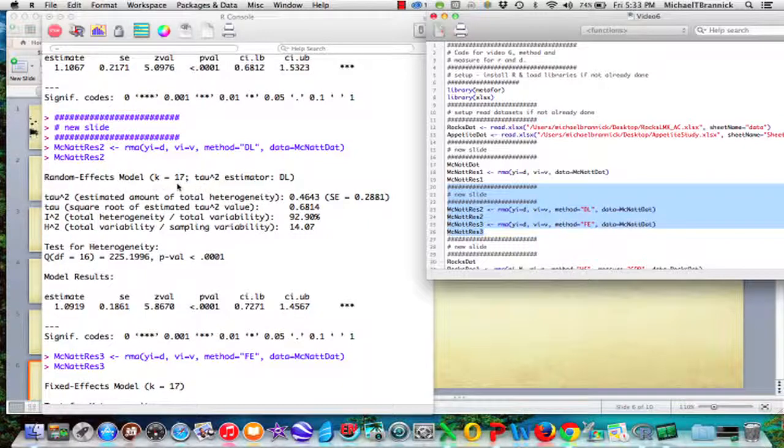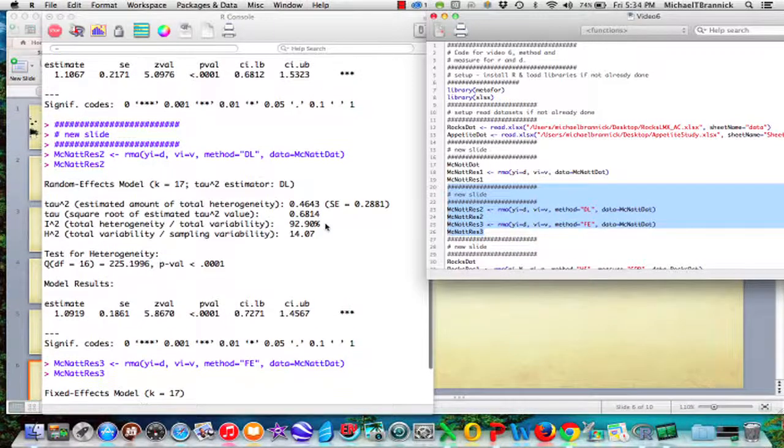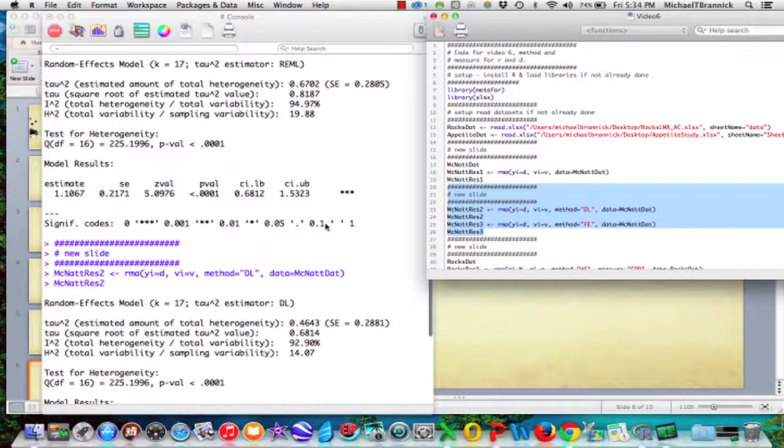Method equals Dersimonian and Laird. Data is the same data. And now I say print McNatt res 2. And it says random effects. Still got 17 effect sizes. And now the estimator is DL instead of REML. Tau squared is 0.46. Tau is 0.68. I-squared is 92.